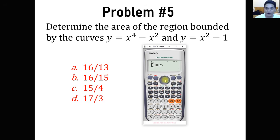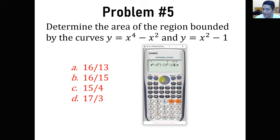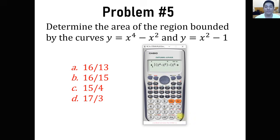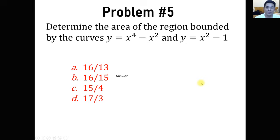Inside the absolute sign we have (x raised to the 4th minus x squared) minus (x squared minus 1), from negative 1 to 1. Don't forget the parentheses because of the minus sign being distributed — better to have parentheses for each of y upper and y lower. We get 16 over 15. That is our answer for this problem.